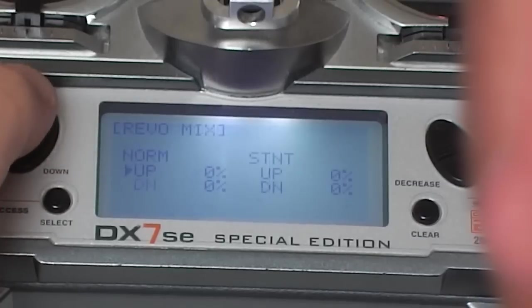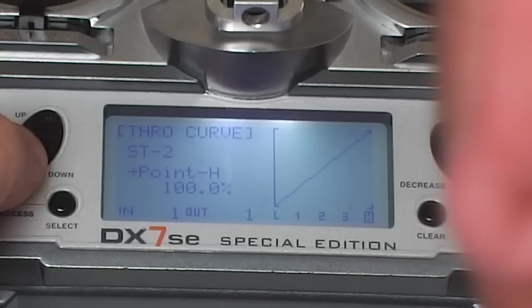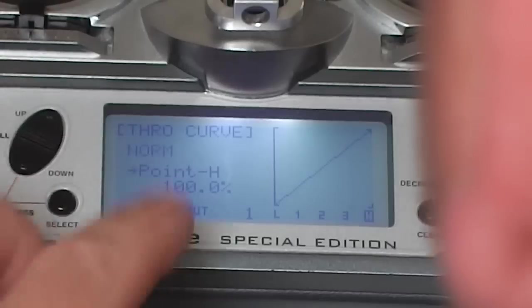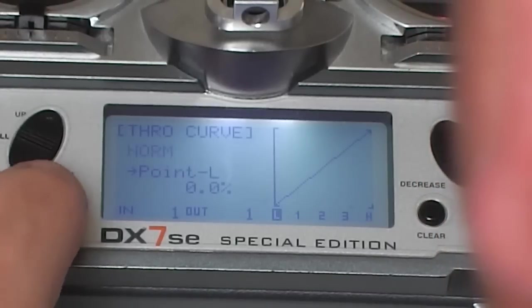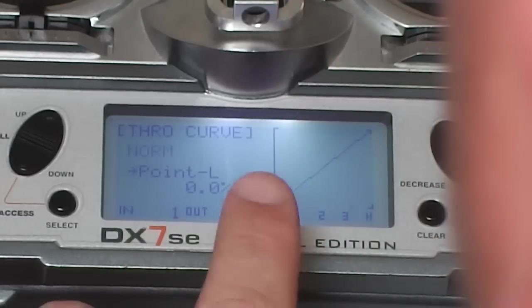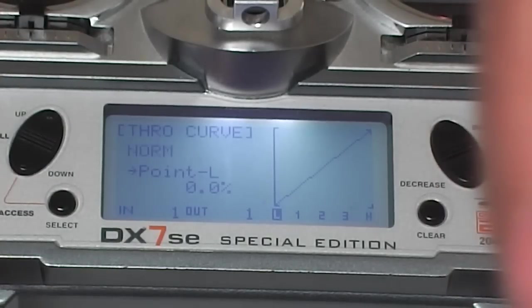Right, so we're going to move on to the throttle curves. I'll start with normal mode. So what I do with normal mode is at low stick I want zero, because you want it on super soft start, and you want zero at bottom stick so you don't want it to be revving.